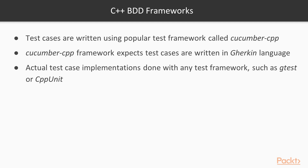In C++, BDD test cases are written using a popular test framework called Cucumber CPP. The Cucumber CPP framework expects that the test cases are written in the Gherkin language, while the actual test case implementations can be done with any test framework such as GTEST or CPP unit.